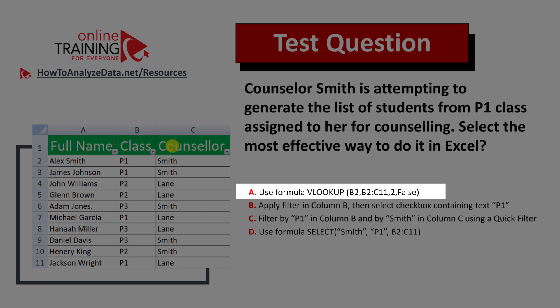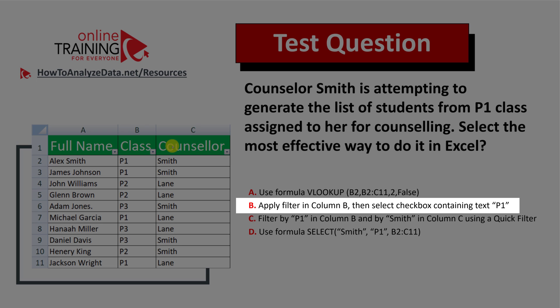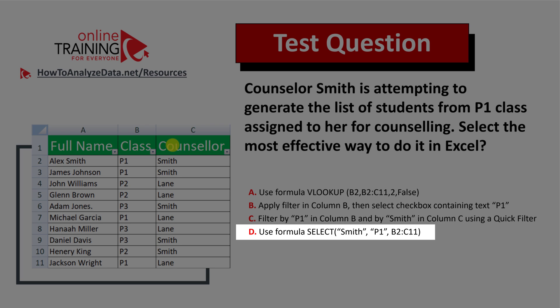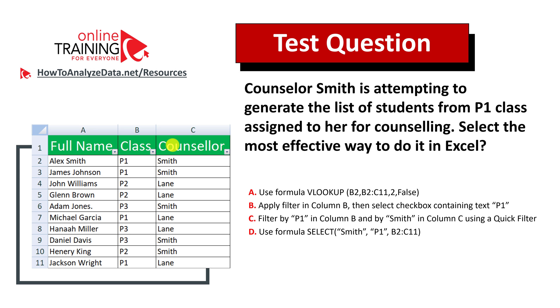Choice A: Use the VLOOKUP formula with the particular syntax. Choice B: Apply filter in column B, then select the checkbox containing text P1. Choice C: Filter by P1 in column B and by Smith in column C using a quick filter. Choice D: Use the SELECT formula with the particular syntax. Give yourself 10 to 15 seconds to see if you can come up with the right answer.